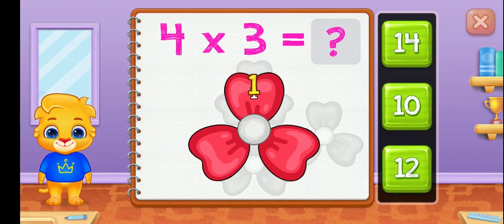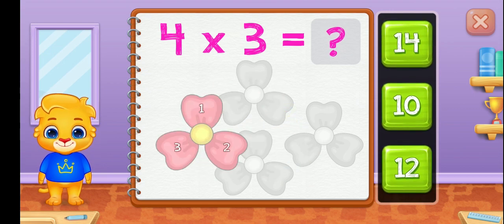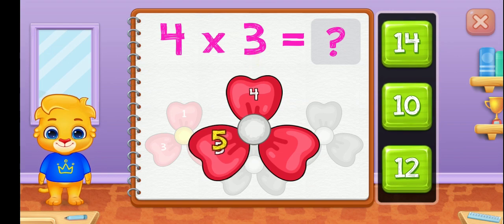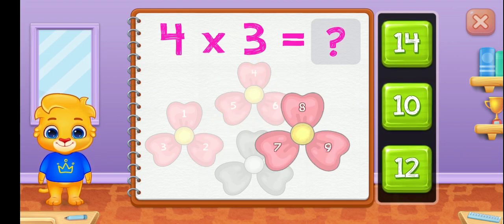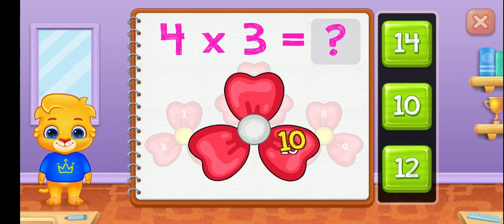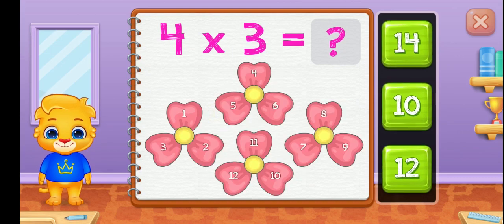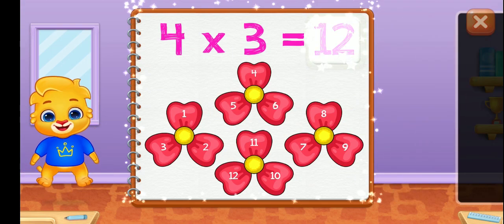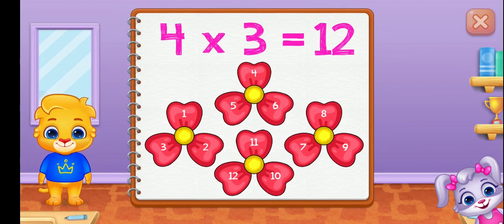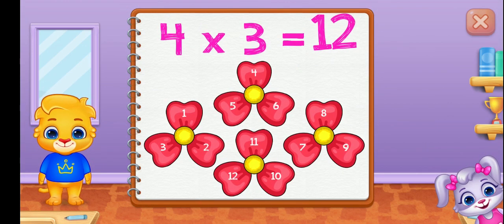One, two, three, four, five, six, seven, eight, nine, ten, eleven, twelve. Four groups of three equals twelve.